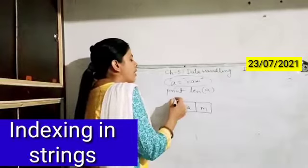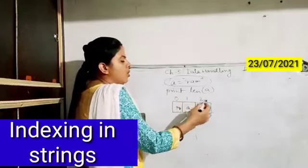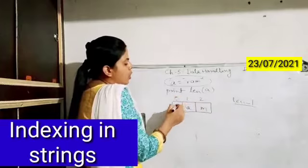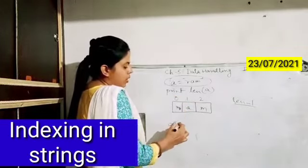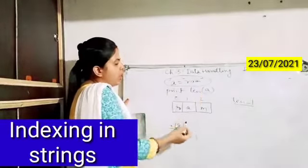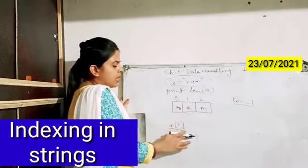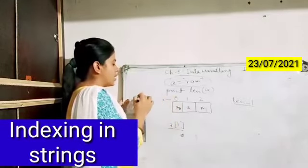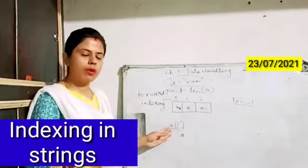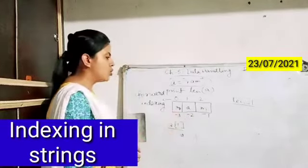This indexing starts from 0, 1, 2 — whatever the length is — and goes till length minus 1. So if the length of the string is 3, indexing goes till 2. If you want to access only 'r', you write a[0] and it gives you 'r' not 'ram'. When I write a[1] it gives me 'a'. This is called forward indexing.